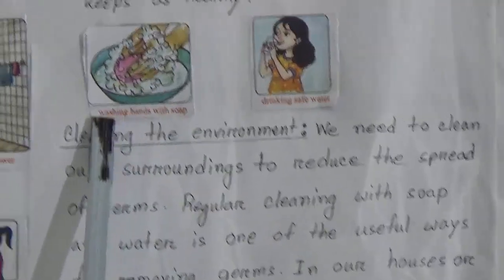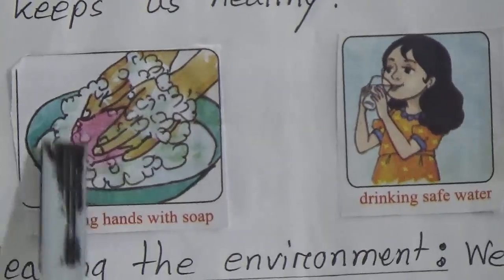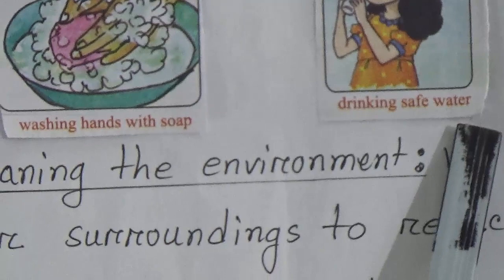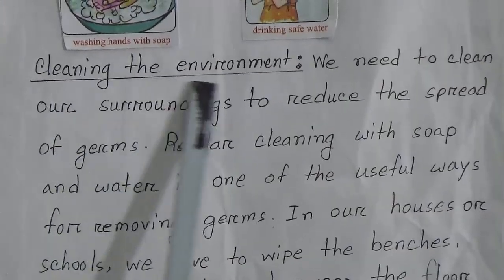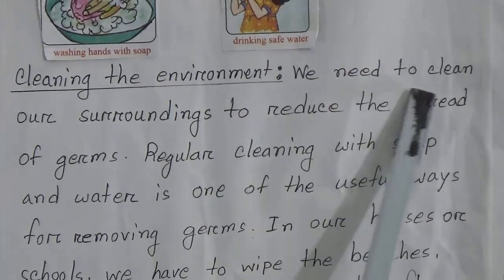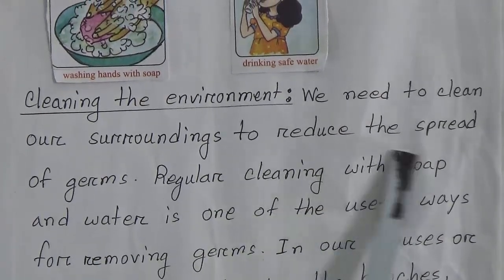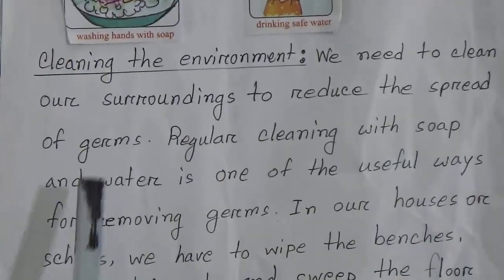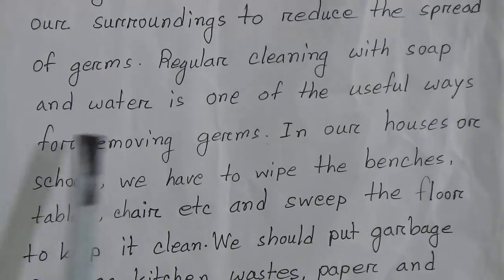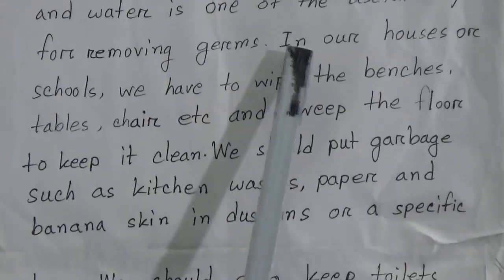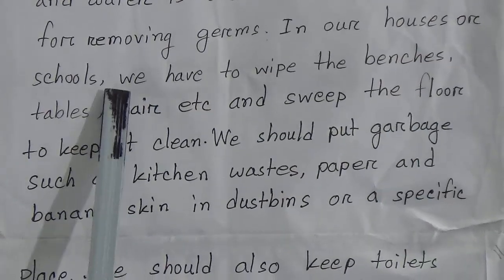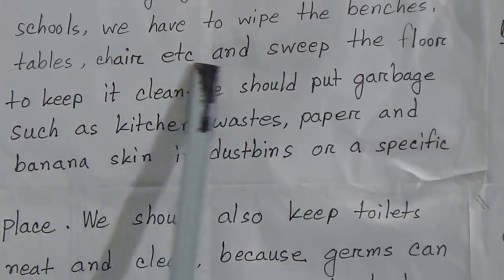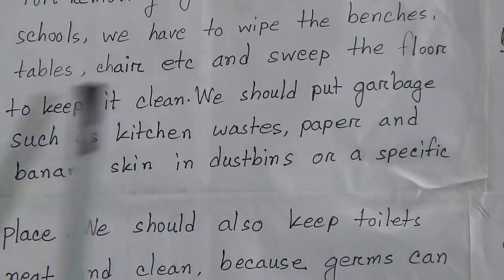In the picture, you can see people washing hands with soap and drinking safe water. The next point is cleaning the environment. We need to clean our surroundings to reduce the spread of germs. Regular cleaning with soap and water is one of the useful ways to remove germs. In our houses or schools, we have to wipe the benches, tables, and chairs, and sweep the floor to keep it clean.